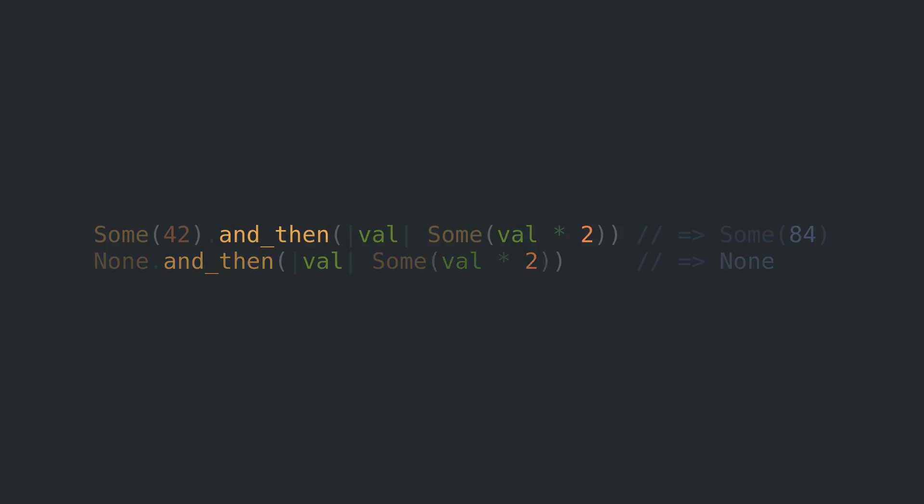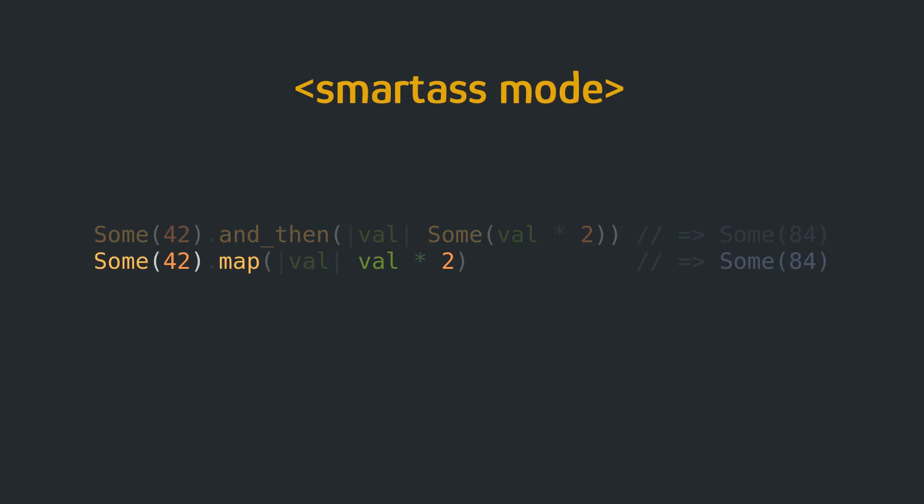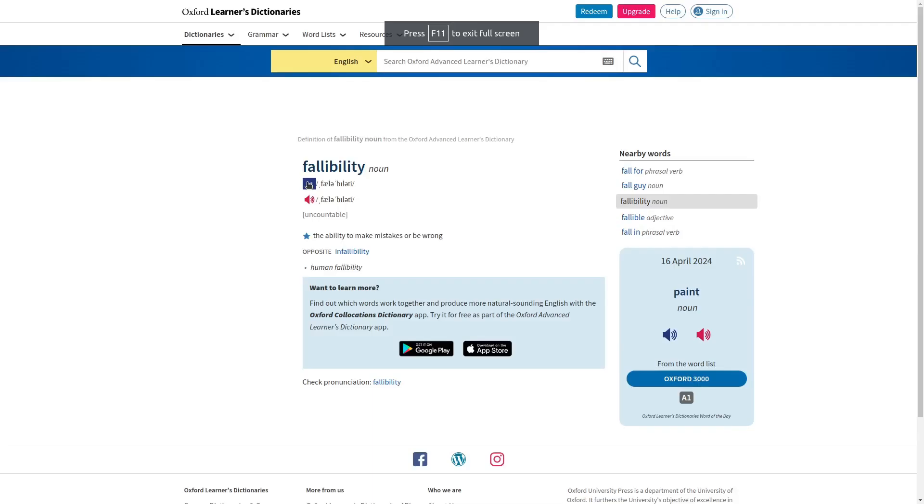You could ask: is AND_THEN really needed when we have map already to operate on the values inside the Some variant? Yes, it is — because of fallibility.